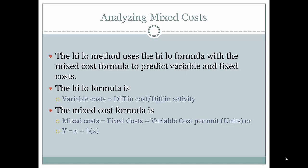The high-low method uses the high-low formula with the mixed cost formula to predict variable and fixed costs. The high-low formula is: variable costs equal the difference in cost divided by the difference in activity. The mixed cost formula is: mixed costs equal fixed costs plus variable costs per unit multiplied by the number of units, or Y equals A plus BX, where A represents fixed costs, B represents variable cost per unit, and X represents the number of units.